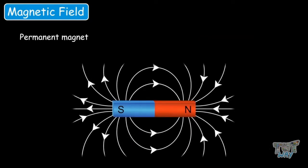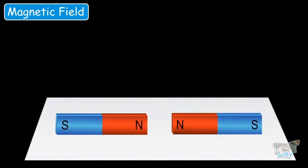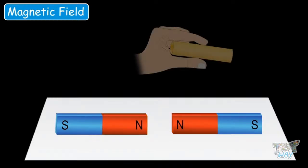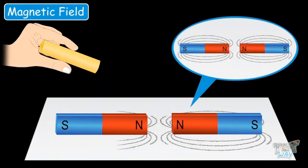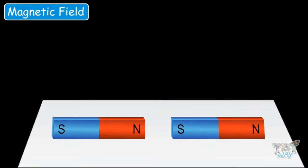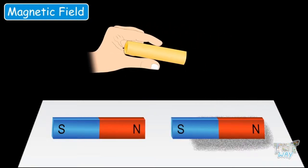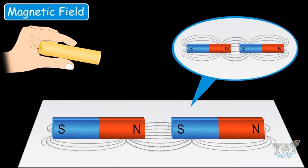A permanent magnet is a magnet that retains its magnetic field without any external assistance. Now place two permanent magnets with their like poles facing each other and sprinkle some iron filings — the filings will show the magnetic field when like poles are repelling each other. Now place two permanent magnets with their opposite poles facing each other and sprinkle iron filings — the filings will show the magnetic field when two opposite poles are attracting each other.